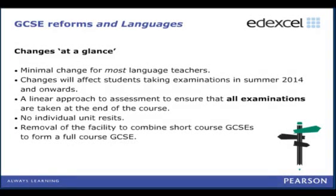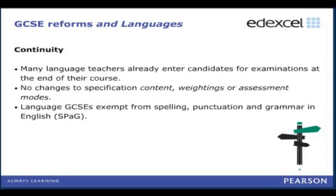Currently students can combine those two short courses to form a full course, which seems very logical. However, with the new linear changes it won't be possible to combine two short courses to form a full course — that flexibility will be removed. Anyone wanting a full course GCSE in Arabic, Greek, Russian or Japanese will have to be entered for all four units in one go.